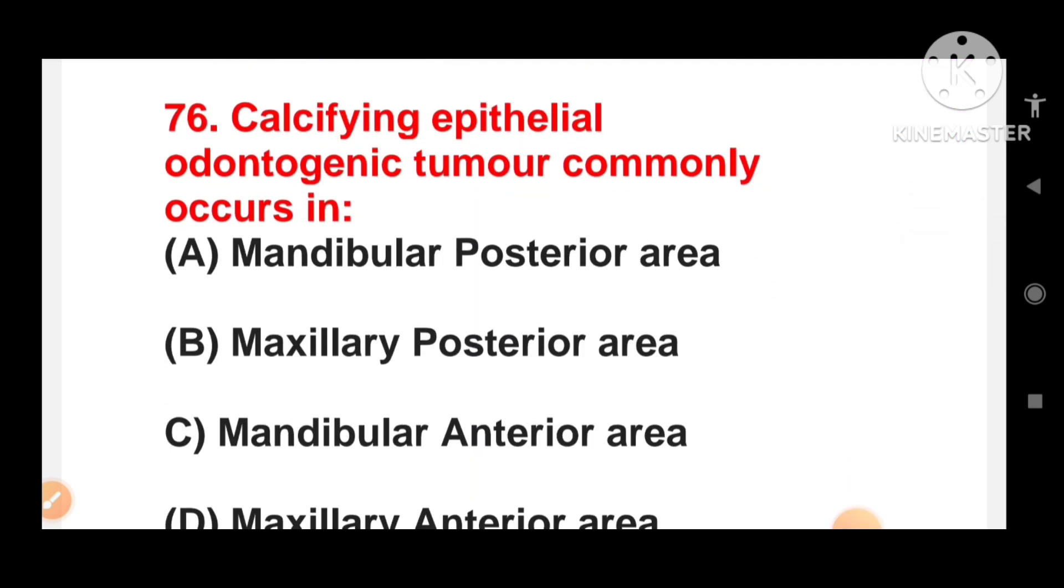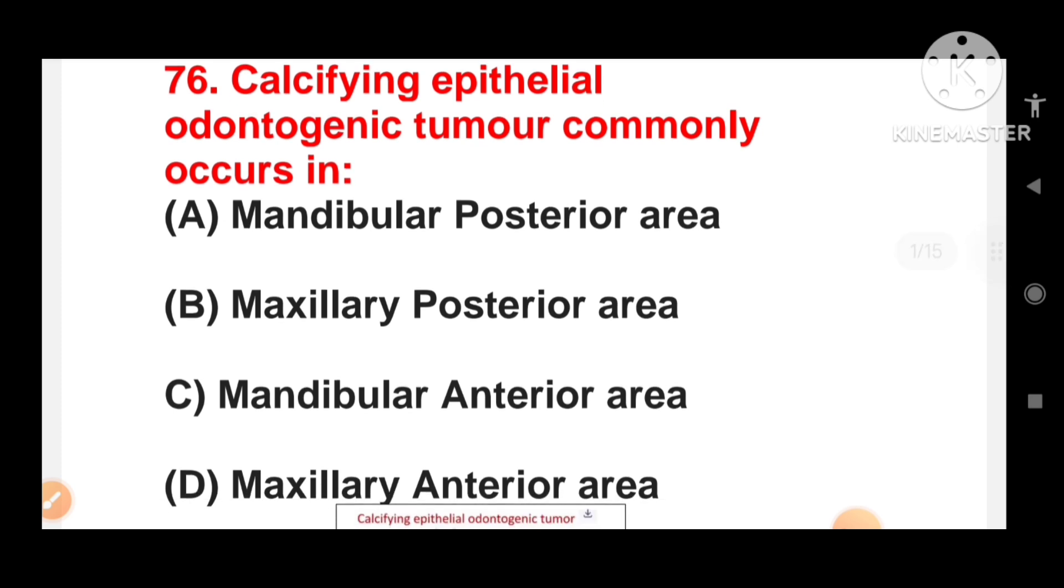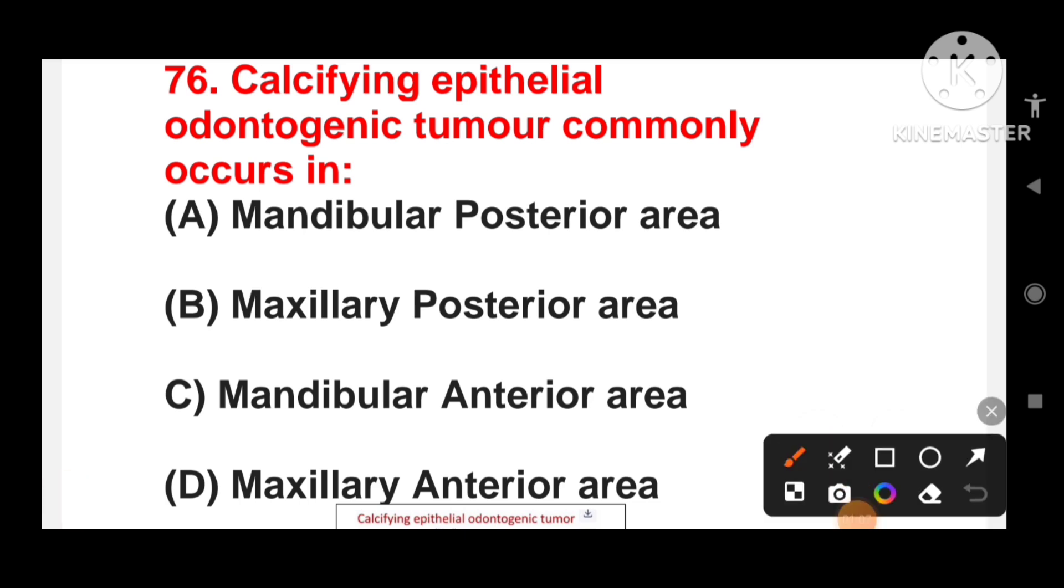Calcifying Epithelial Odontogenic Tumor commonly occurs in Mandibular Posterior Area, Maxillary Posterior Area, Mandibular Anterior Area or Maxillary Anterior Area? Calcifying Epithelial Odontogenic Tumor is also known as Pindborg Tumor and it is a rare benign neoplasm that occurs more often in middle age patients and usually in Mandibular Posterior Area. So the correct answer for this question is Mandibular Posterior Area.